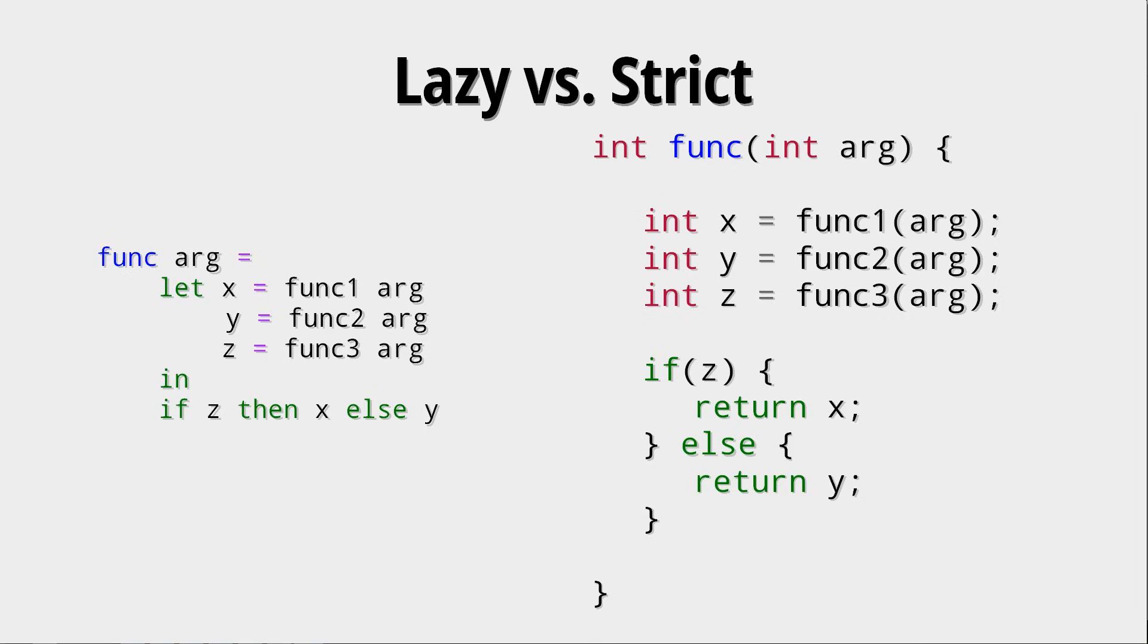But the very important thing to understand here is that things only get evaluated if they're needed. Of course, you could write the example on the right a bit differently. You could replace x and y with just the functions in the if-then-else, and it would also just take two years. But that's not the point here. It's important to understand what the difference between lazy evaluation and strict evaluation is.